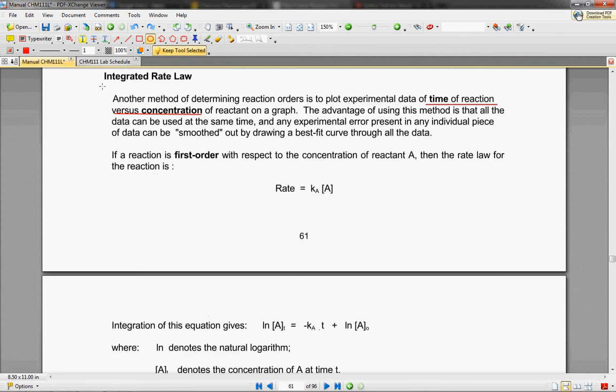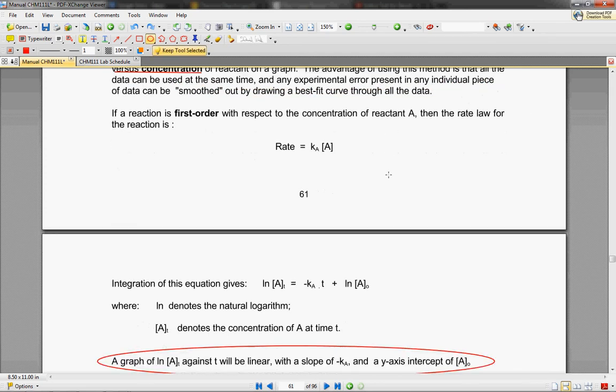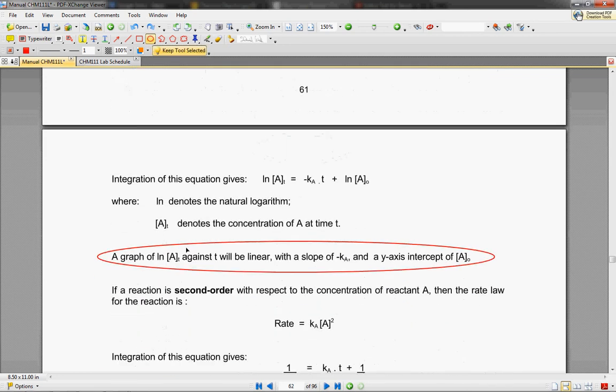What we're going to be using is a time versus concentration of reactant graph. So if you've got a first order reaction, you're going to get a graph where A is going to be linear. Remember the y-axis is concentration and the x-axis is time. It would be linear like that, with a slope of negative Ka and a y-intercept of A sub-zero, so that's your initial concentration.